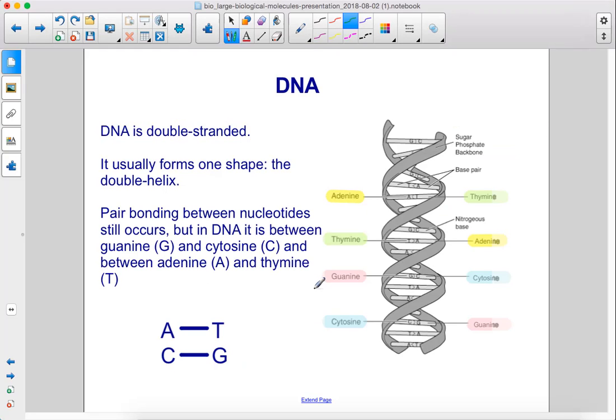DNA is double-stranded. It usually forms one shape, the double helix. Pair bonding between nucleotides still occurs, but in DNA it is between guanine and cytosine, and between adenine and thymine.